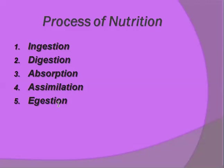All five processes are collectively known as nutrition. These processes are: ingestion — taking in food; digestion — changing that food into a simpler form; absorption — mixing of that food into the blood; assimilation — utilization of that absorbed food; and finally egestion — throwing out the undigested food from the body.